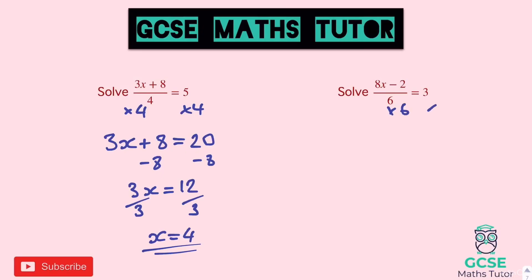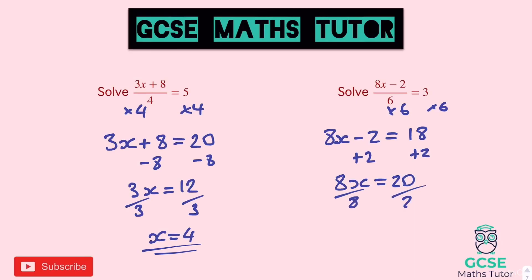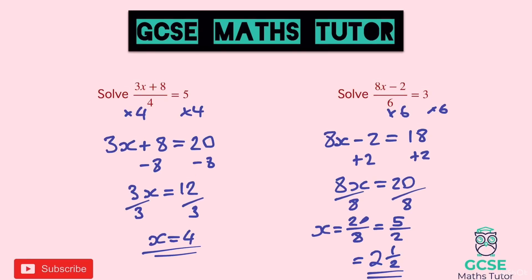For the second one: multiply both sides by 6 to get 8x minus 2 equals 18. Since it's negative 2, add 2 to both sides, giving 8x equals 20. Divide by 8 to get x equals 20 over 8. Simplify by dividing top and bottom by 4 to get 5 over 2, which is 2 and a half or 2.5.